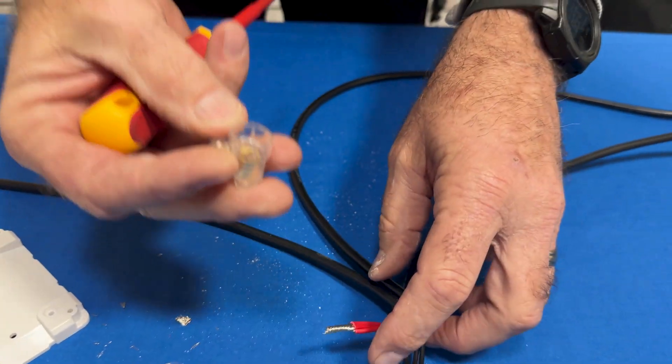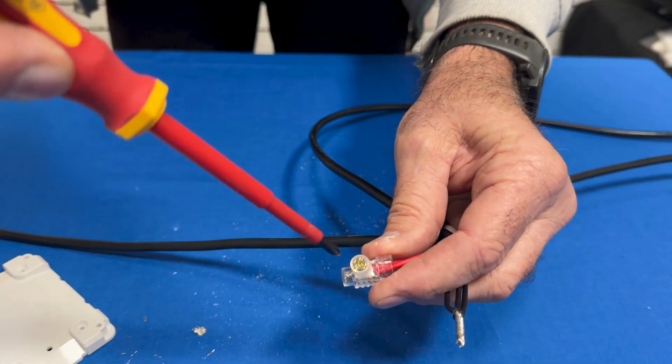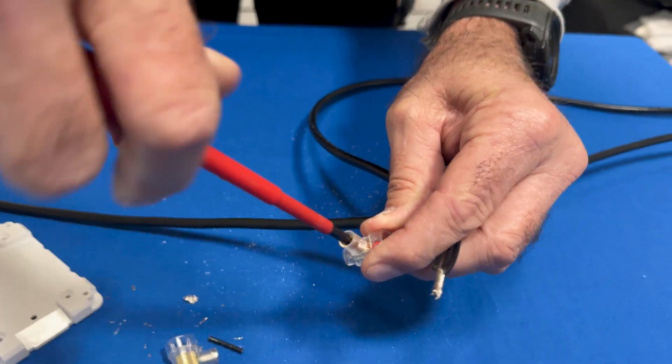Basically you can see where the cable goes. It goes in there and that just screws down on the join.